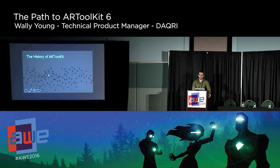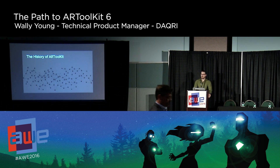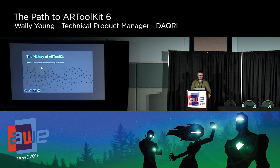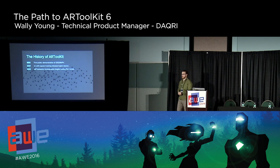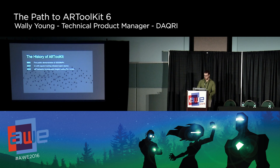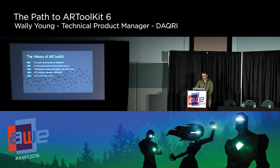ARToolkit has had a really long history. It started with Professor Hirokato, who was at the University of Washington's HIT Lab, now at the NARA Institute of Science and Technology. In 1999 was the first public demonstration. In 2001, ARToolkit was released open source with square tracking, and they also incorporated ARToolworks, which began selling a pro version. In 2004, NFT or image tracking was added, and version 2 was released open source.